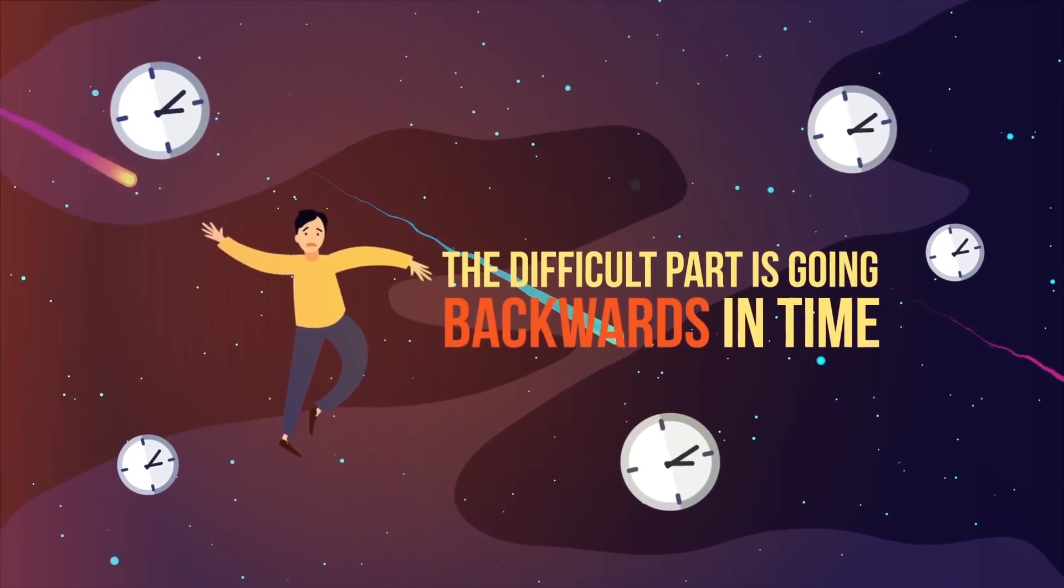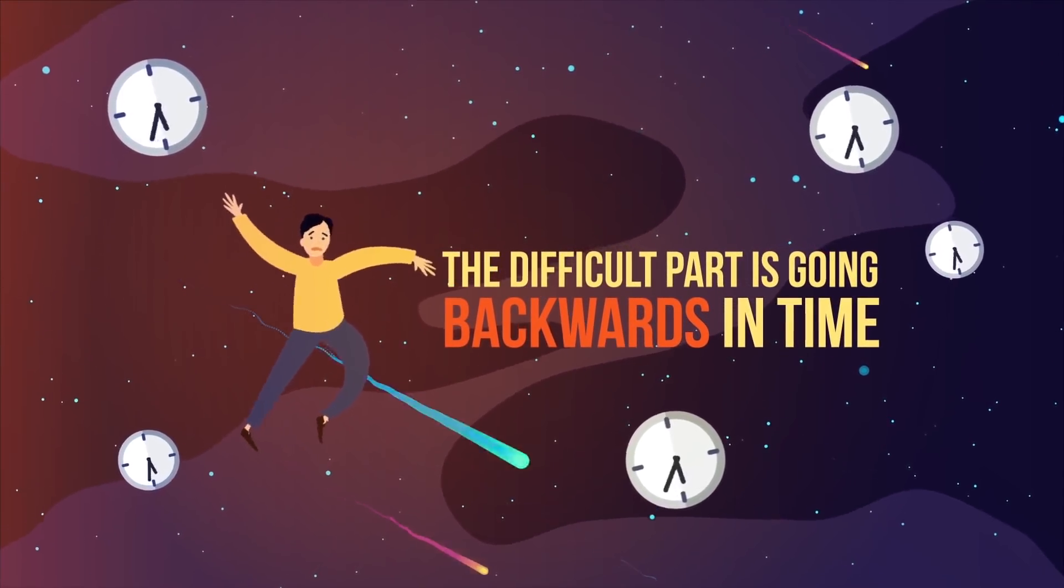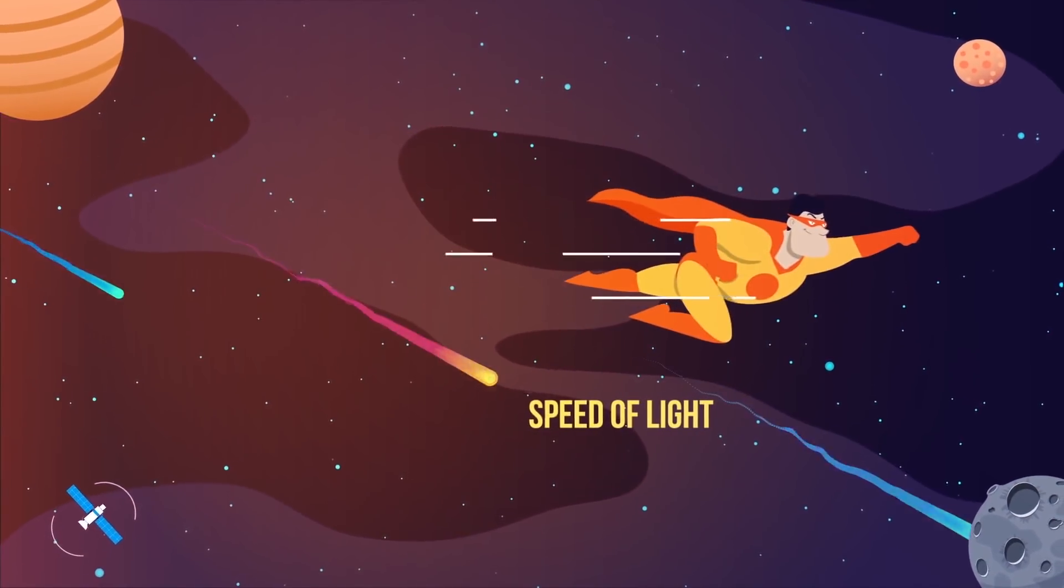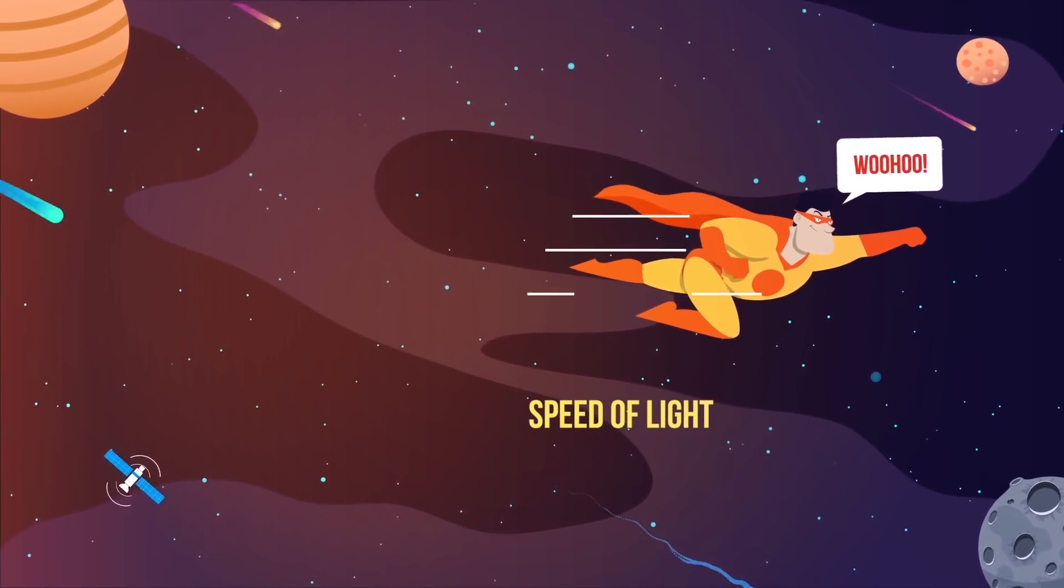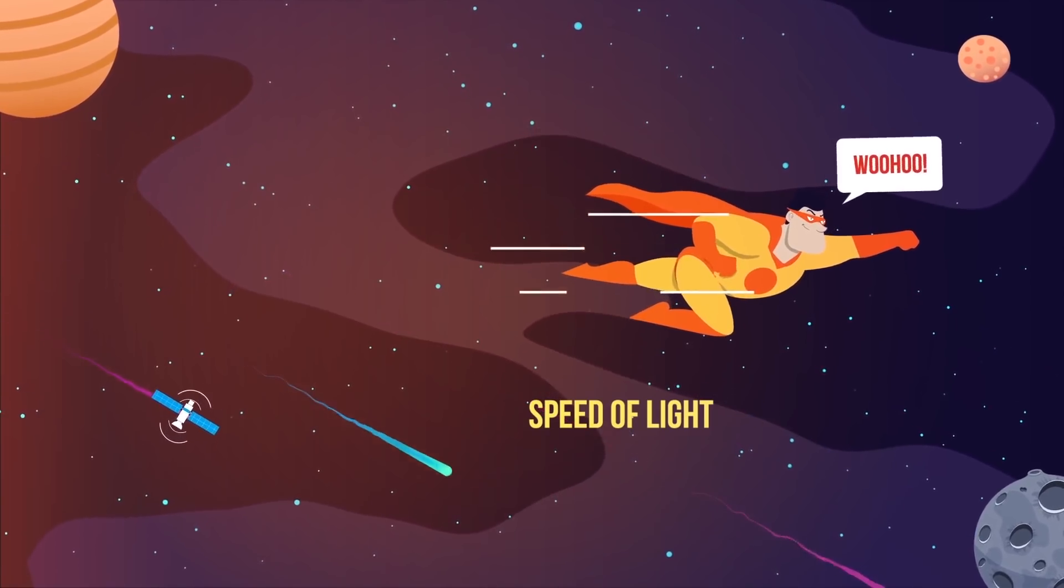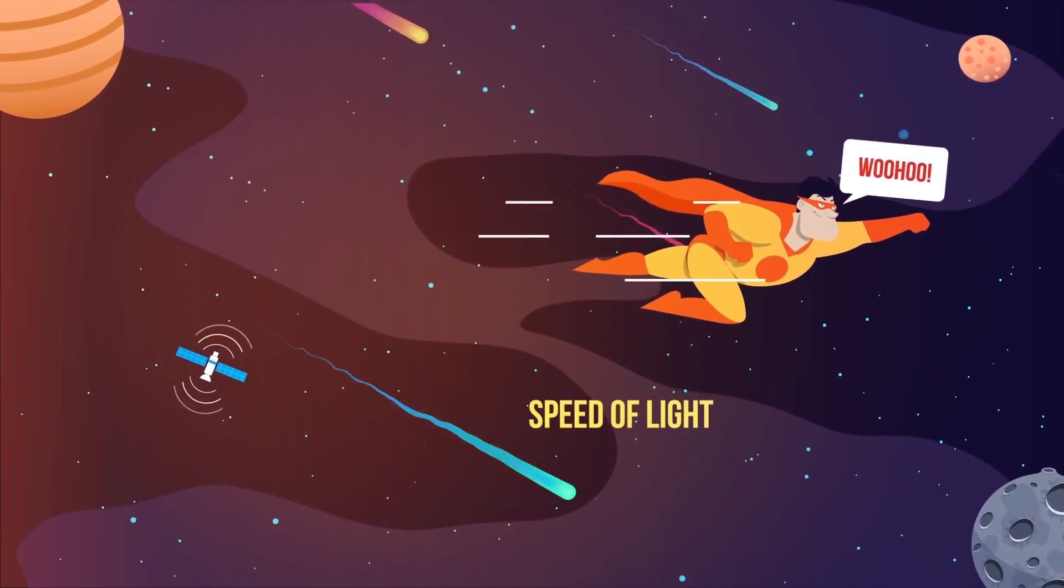The really difficult part, of course, is going backwards in time. If at the speed of light, time is stagnant, then does that mean if you were to travel faster than the speed of light, then would time work in reverse?